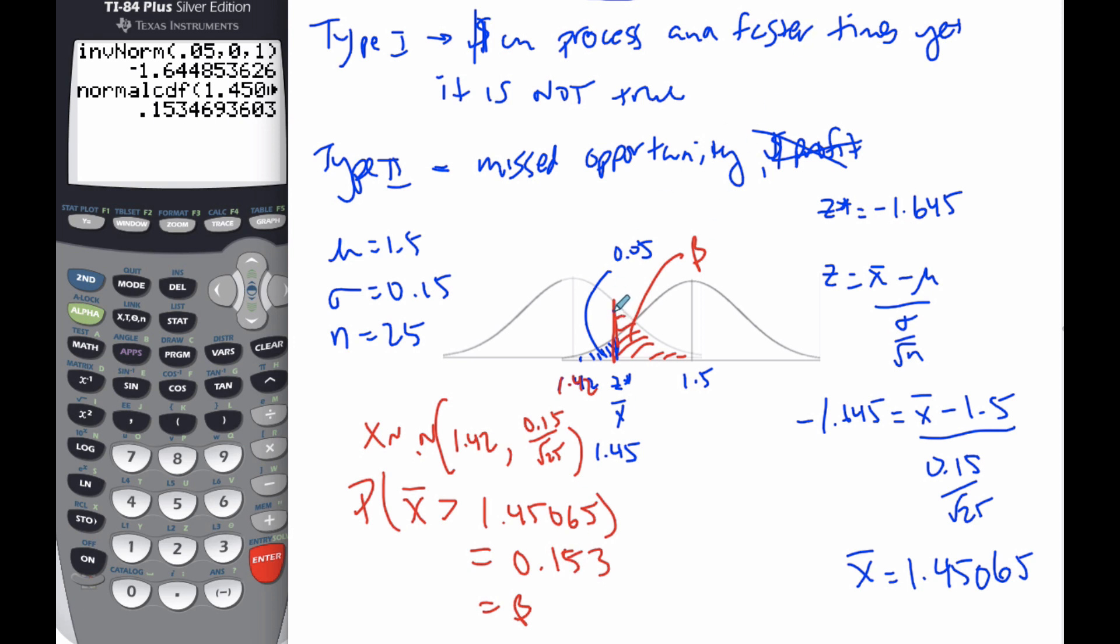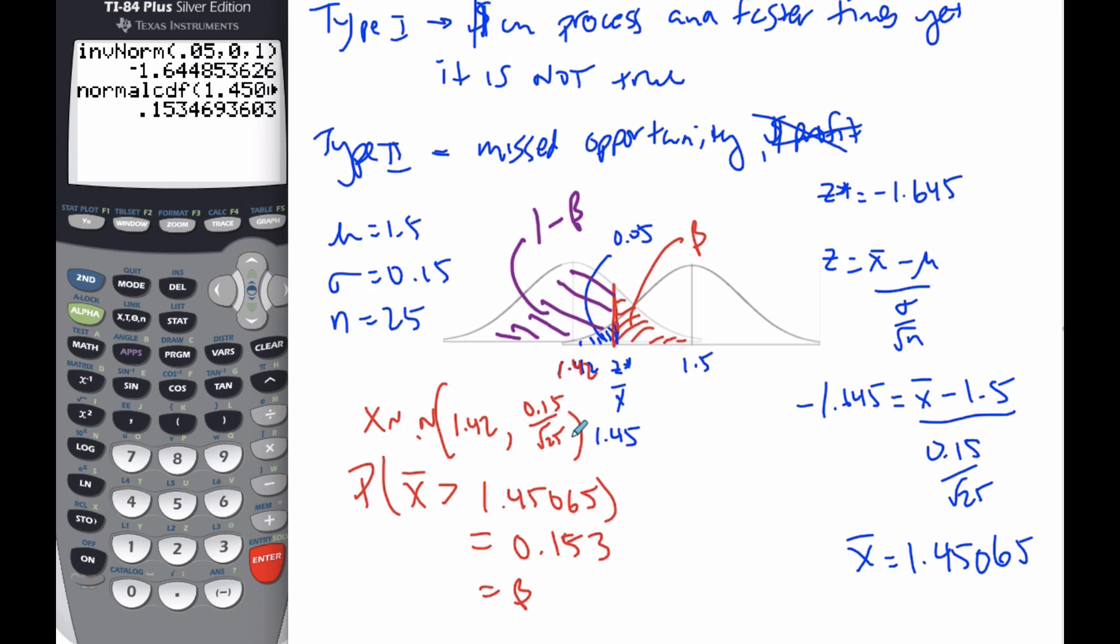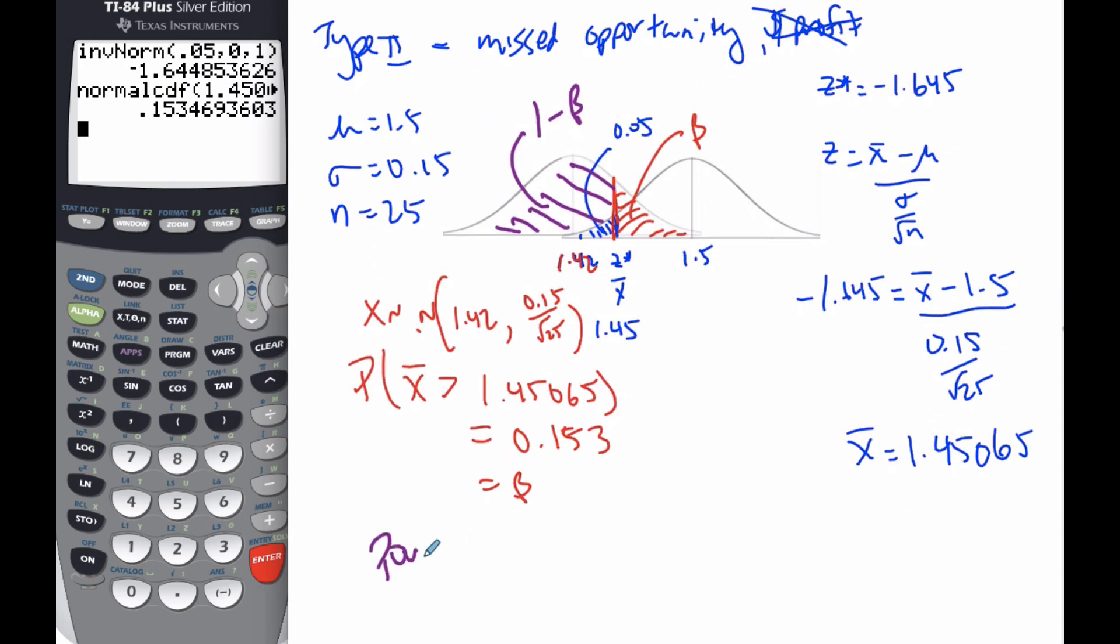And this probability is then 0.153. And so my probability of a type 2 error is 15%. This is beta. Then this probability here in purple, which is 1 minus beta, this is the power of the test. So the power of the test is 1 minus 0.153. And I get is going to be 0.847 is the power of the test.